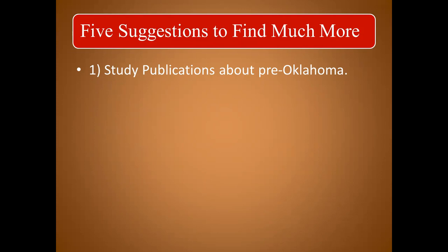Number one: study the publications that are already out there about life pre-Oklahoma, meaning pre-statehood, which we know occurred in 1907. Some of those publications are digital, some are published books, journals, theses, dissertations, and articles.